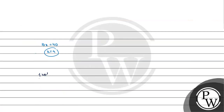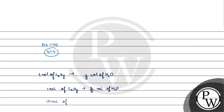For 1 volume of CxHy, we get y by 2 volumes of water. So 1 ml of CxHy gives y by 2 ml of water. Therefore, 10 ml of hydrocarbon gives 10 times y by 2, which equals 5y ml of water. Since 5y equals 50, y equals 10.